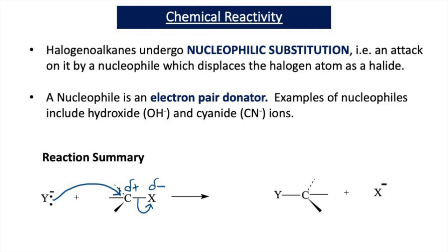A nucleophile is an electron pair donator. Examples of nucleophiles include hydroxide ions and cyanide ions. On this slide we can see the general mechanism or reaction summary for nucleophilic substitution. The Y⁻ here represents the electron pair donator — the nucleophile — and a pair of electrons will move from the nucleophile towards the delta-plus carbon of the halogeanoalkane.